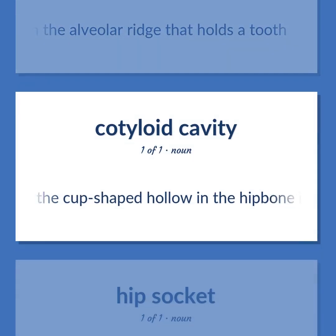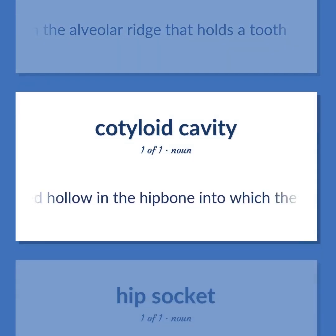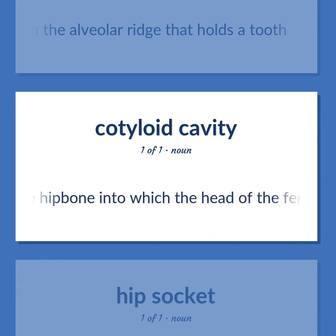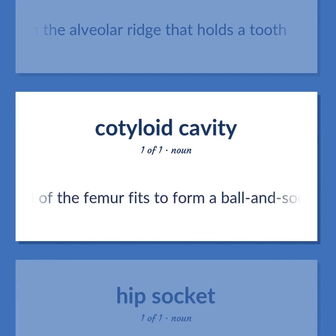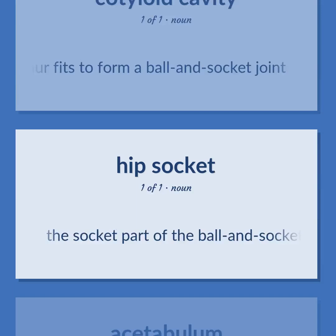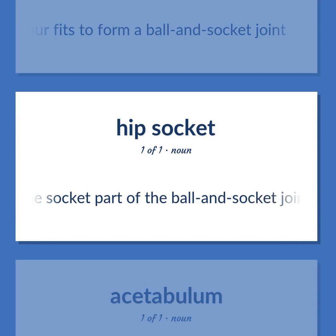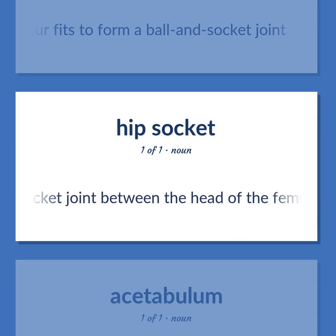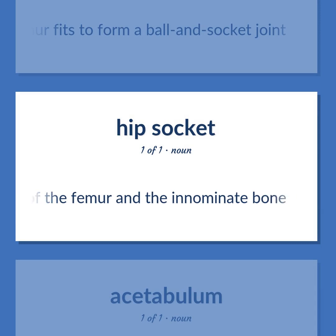The cup-shaped hollow in the hip bone into which the head of the femur fits to form a ball-and-socket joint. The socket part of the ball-and-socket joint between the head of the femur and the innominate bone.